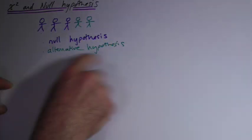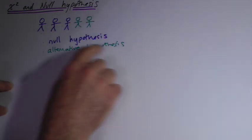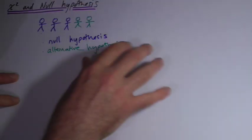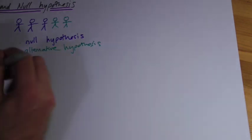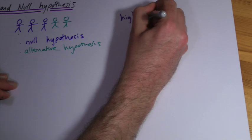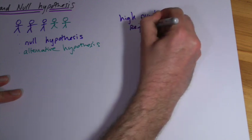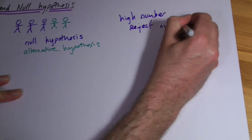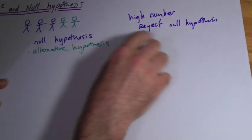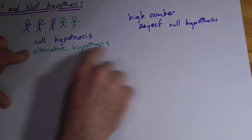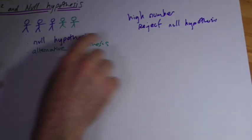My alternative hypothesis is that my medicine makes people stronger, but I can't prove that. All I can do is say that this is more likely to be happening than the null hypothesis. I can perform a series of statistical tests, which will basically give me a number. The higher the number I get, the more likely I can reject the null hypothesis. So if I did this test on hundreds and thousands of people and got a value that was quite high, I could say I reject the null hypothesis — meaning this is more and more likely to be true. I never actually proved it; I just said it's more likely.